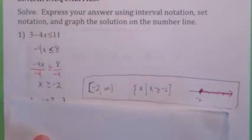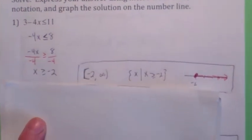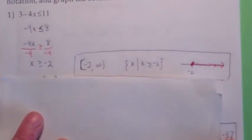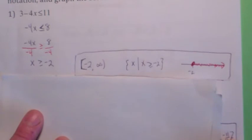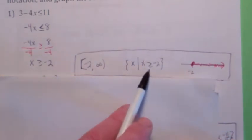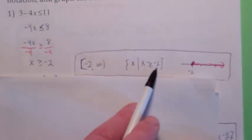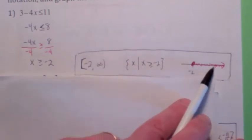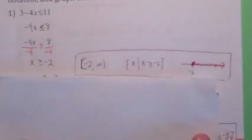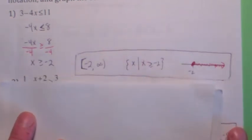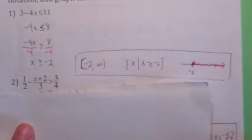How would you write that? It would be closed on negative 2 to open on infinity. This would be the set of all x such that x is greater than or equal to negative 2. And this would be everything to the right of negative 2 with a closed circle. Let's do another one.